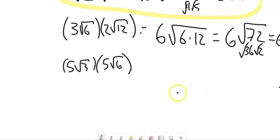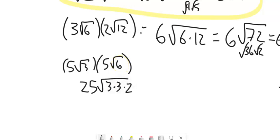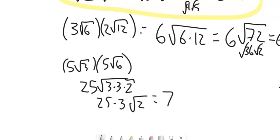Let's take a look at this last one. 5 times 5 is 25. Then I have the square root of 3 times 6, and I'll say 6 is 3 times 2. Notice the square root of 3 times 3 is the square root of 9, which is 3. So this is 25 times 3 times square root of 2, which is 75 root 2. If you don't like this approach, you can multiply to get root 18 and then reduce it to 3 root 2 — that's a perfectly legitimate way to do this problem.